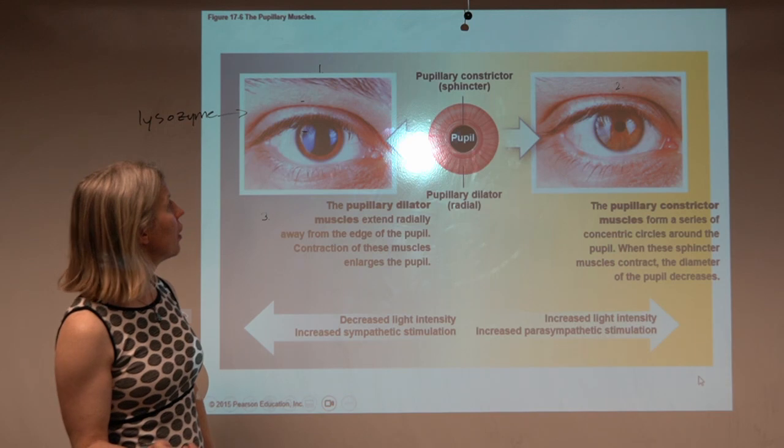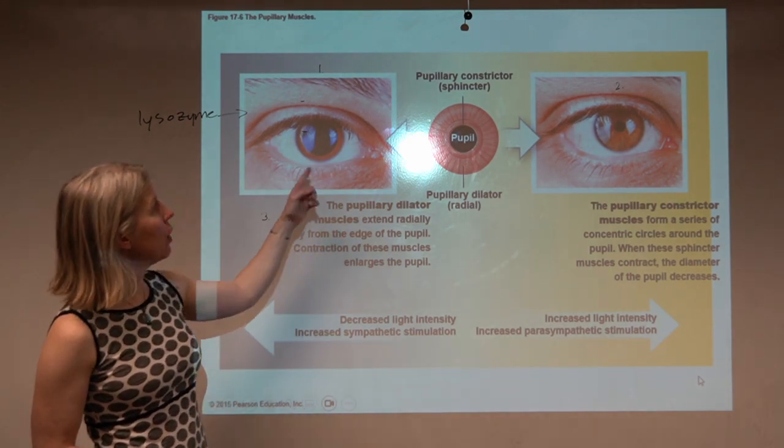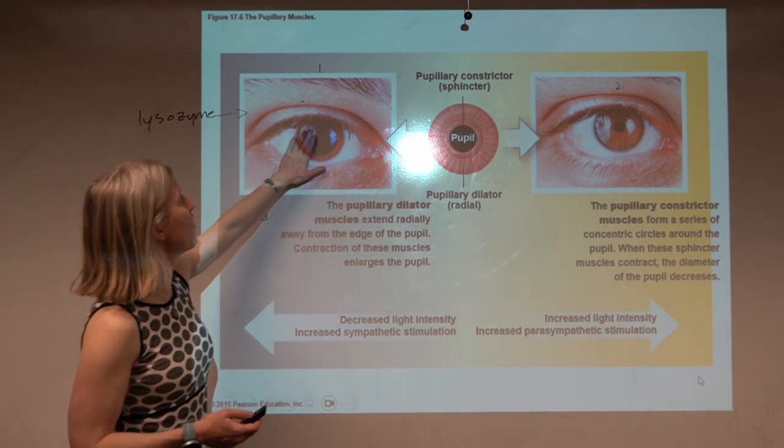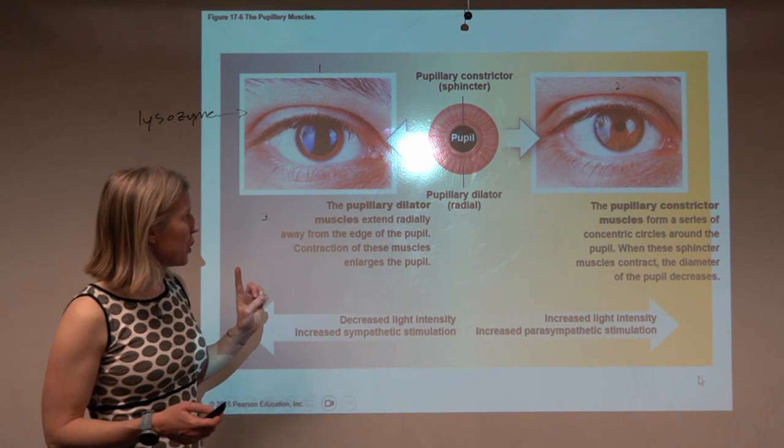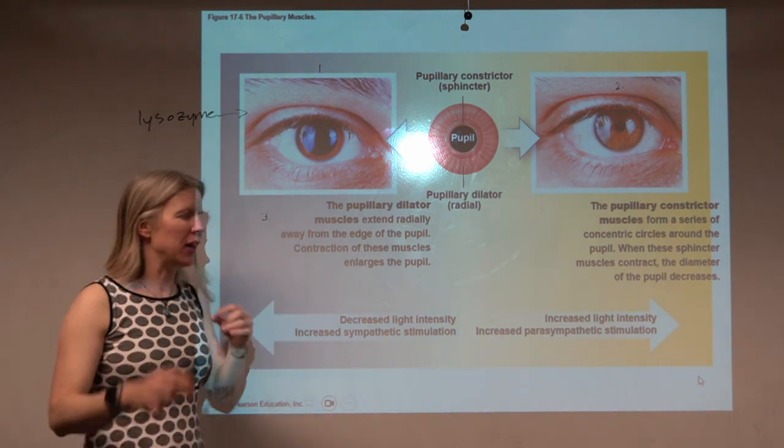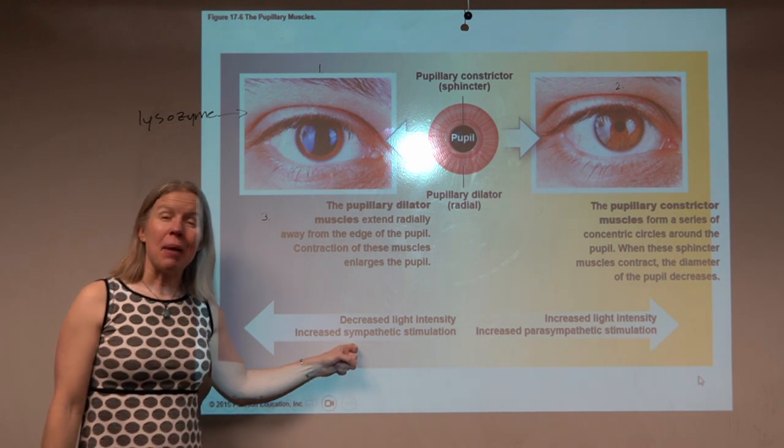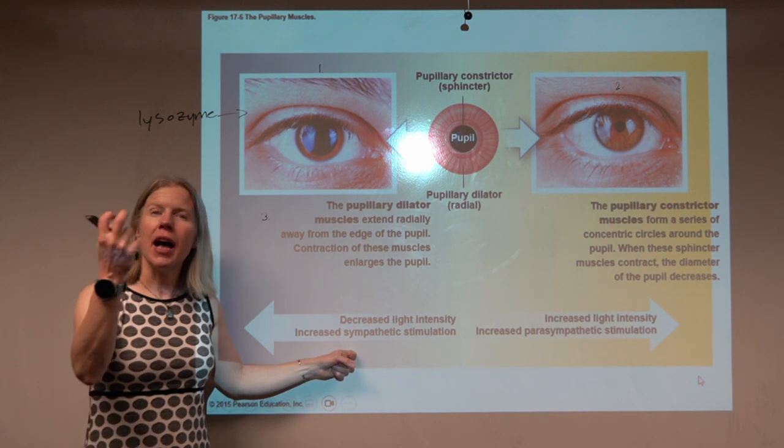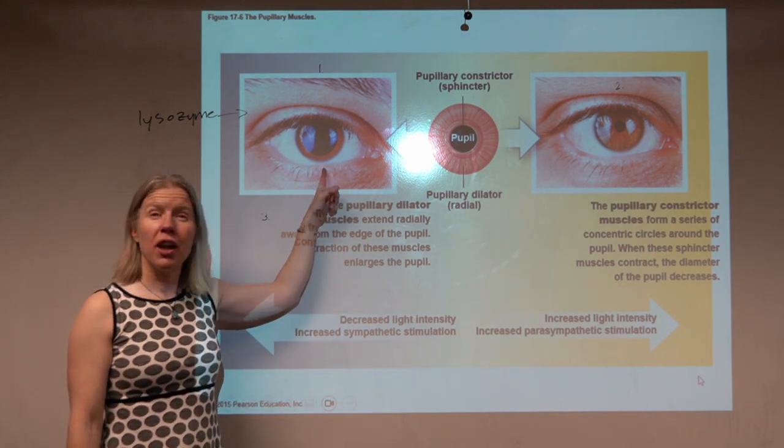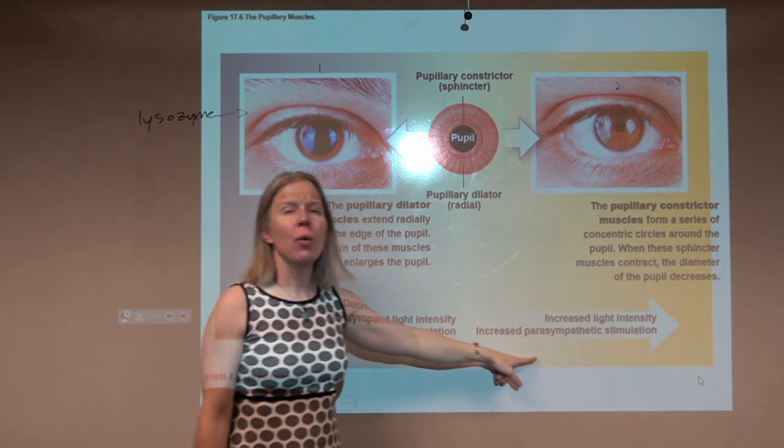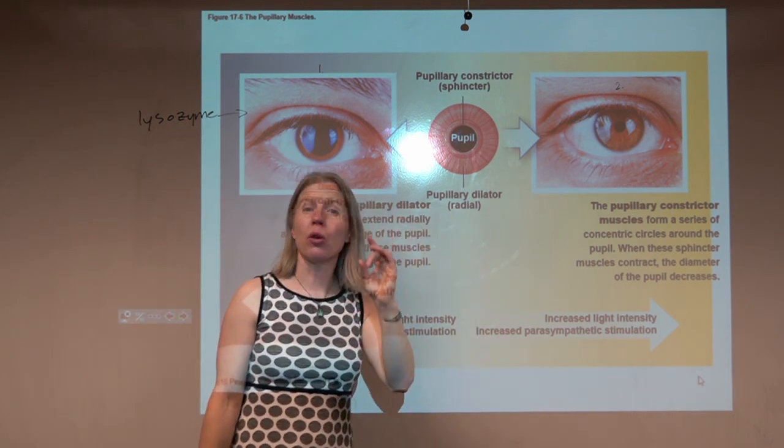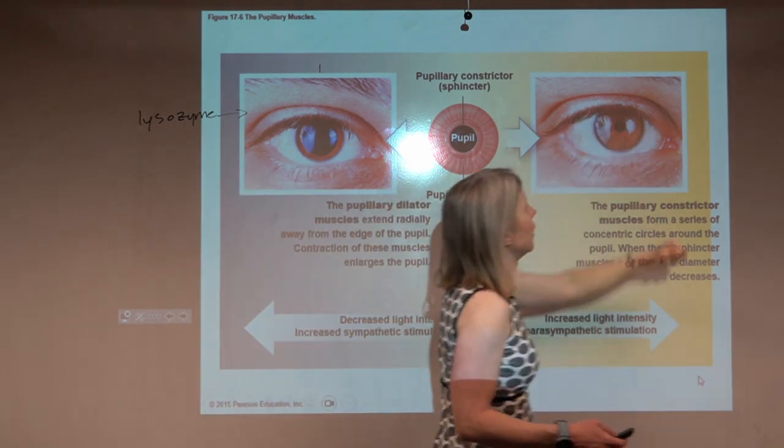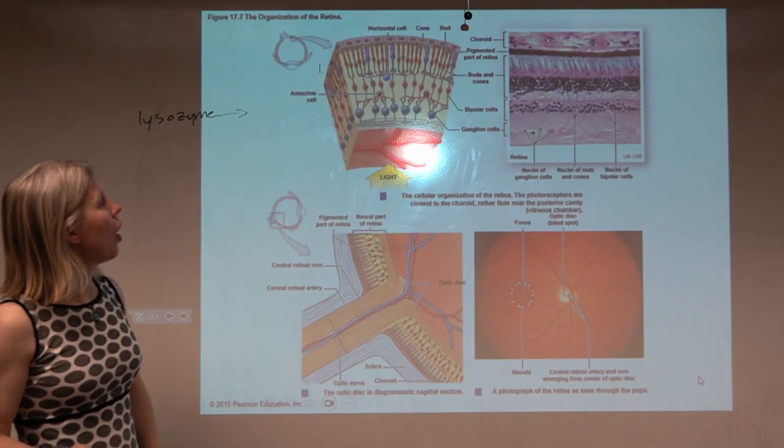So here we're looking at how the pupil is able to open and close. It's just a sphincter. Now the other thing and the reason I actually included this is they remind us that the sympathetic nervous system, that fight-or-flight response, as you're trying to bring in as much information as possible, those pupils get really dilated. When you're more relaxed, that pupil can be much smaller. You're not trying to gather as much information about the outside world.